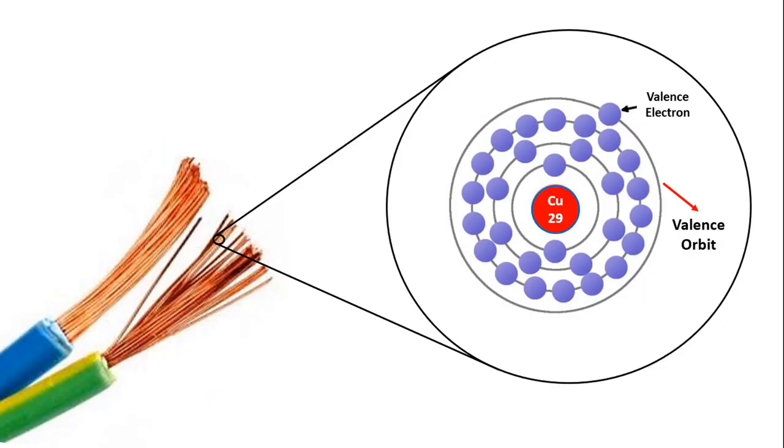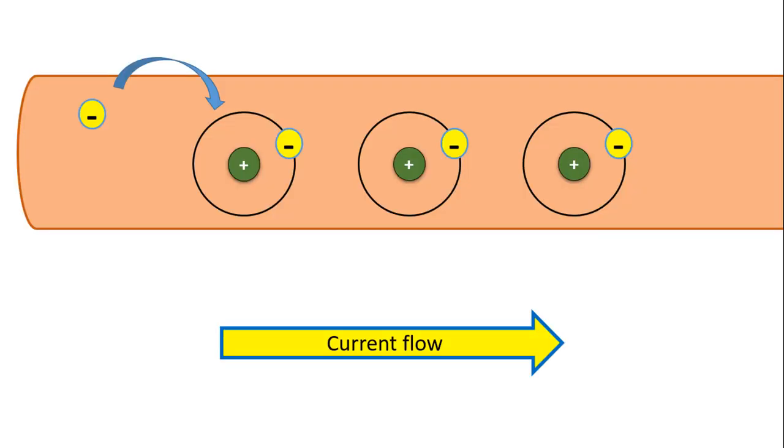Copper wires are often used to build the circuit because the atoms that make up the copper have an outermost weakly bound electron or a valence orbital that can move freely inside the metal. This free electron is very easy to transport, so copper is the most used and a good conductor.